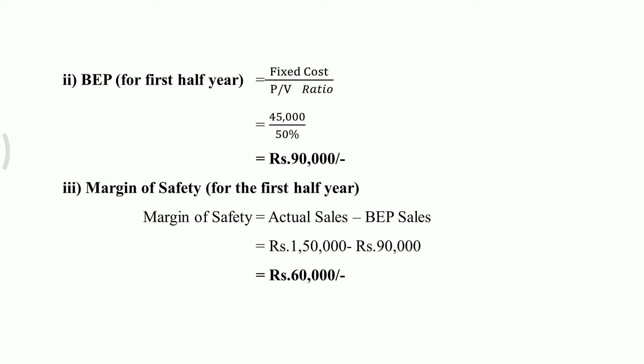Next, calculation of margin of safety for the first half year. Margin of safety equals actual sales minus BEP sales. Actual sales is 1 lakh 50,000 minus BEP sales 90,000. We get margin of safety rupees 60,000.